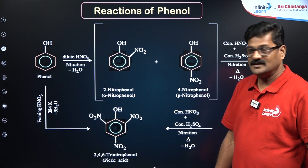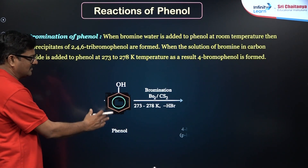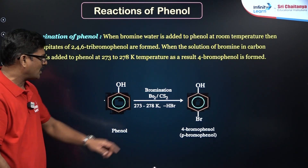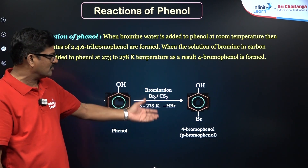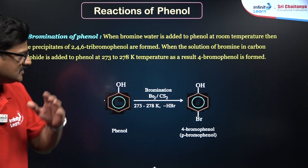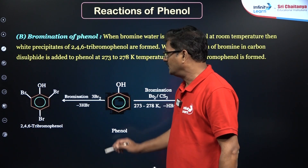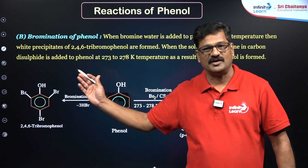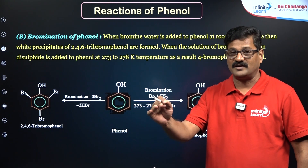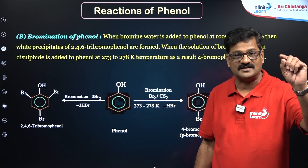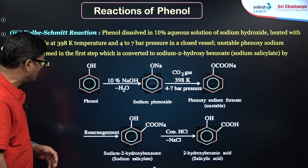Bromination of phenol: phenol reacts with Br₂ in CS₂ (carbon disulfide, a non-polar solvent) to give 4-bromophenol and 2-bromophenol, with para-bromophenol as the major product. With bromine water, phenol gives 2,4,6-tribromophenol as a white precipitate — this is a test for phenol. Phenol also reacts with neutral FeCl₃ to give a purple to violet coloration, which is a confirmatory test for phenol.